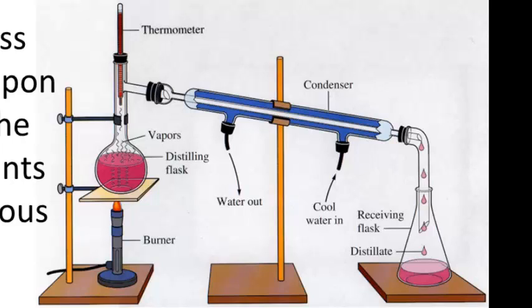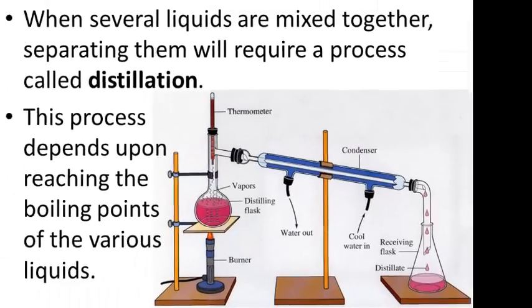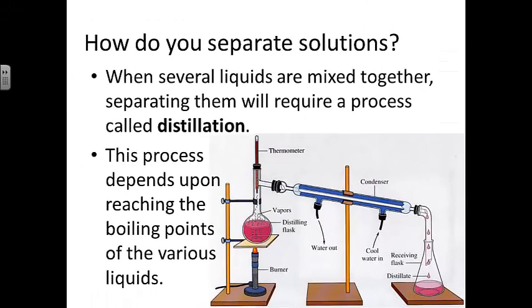Watching the thermometer, eventually you'll see the temperature begin to rise again with no vapor coming out. You can remove that flask, place a new one, and wait until the temperature reaches the boiling point of the next liquid. You can continue in this manner to collect one liquid portion after another, separating out the different components of the liquid mixture. The differences in the boiling and condensation points of the liquids is what allows them to be separated.